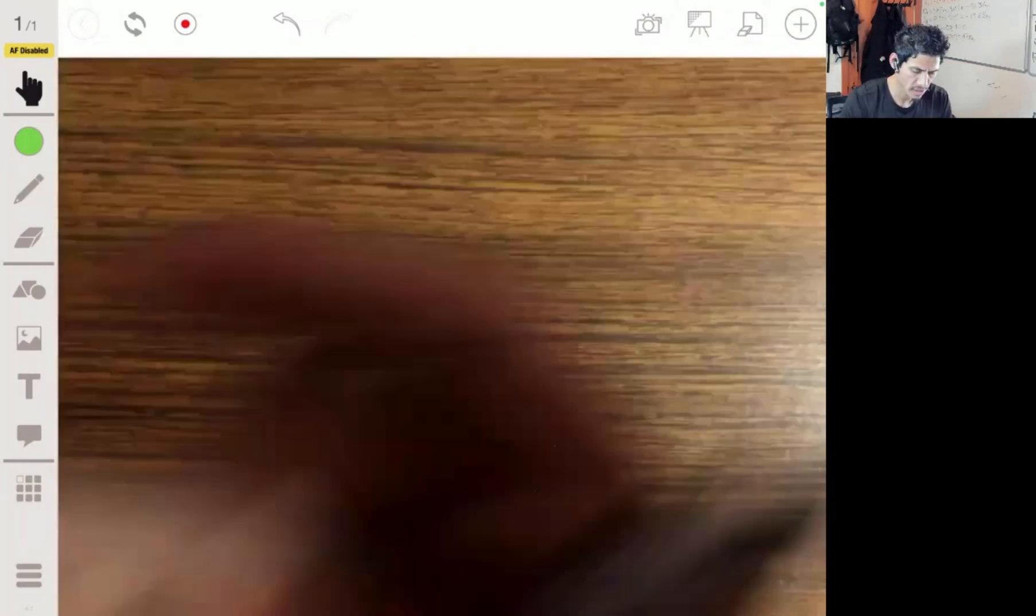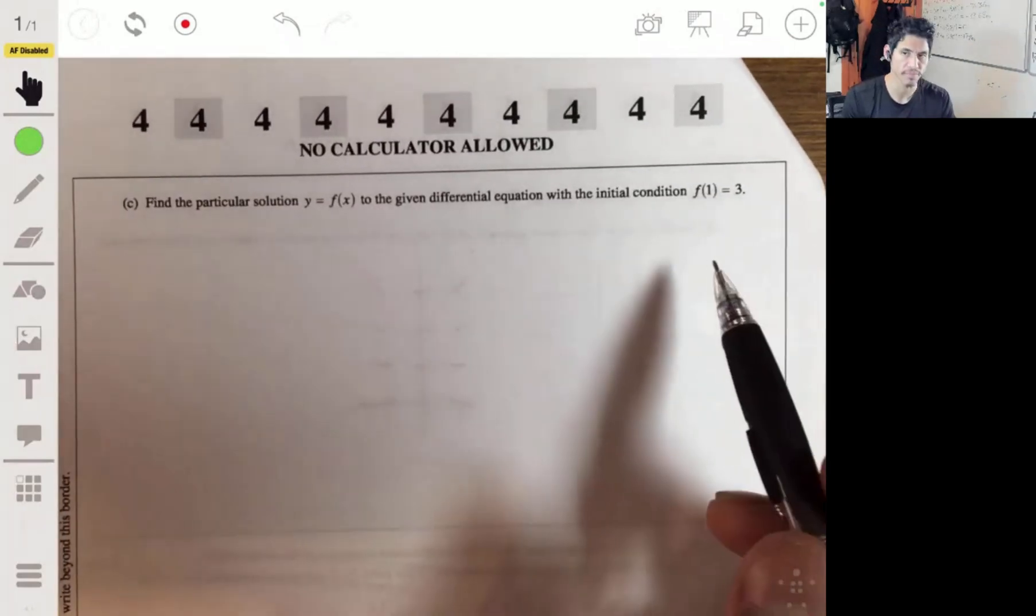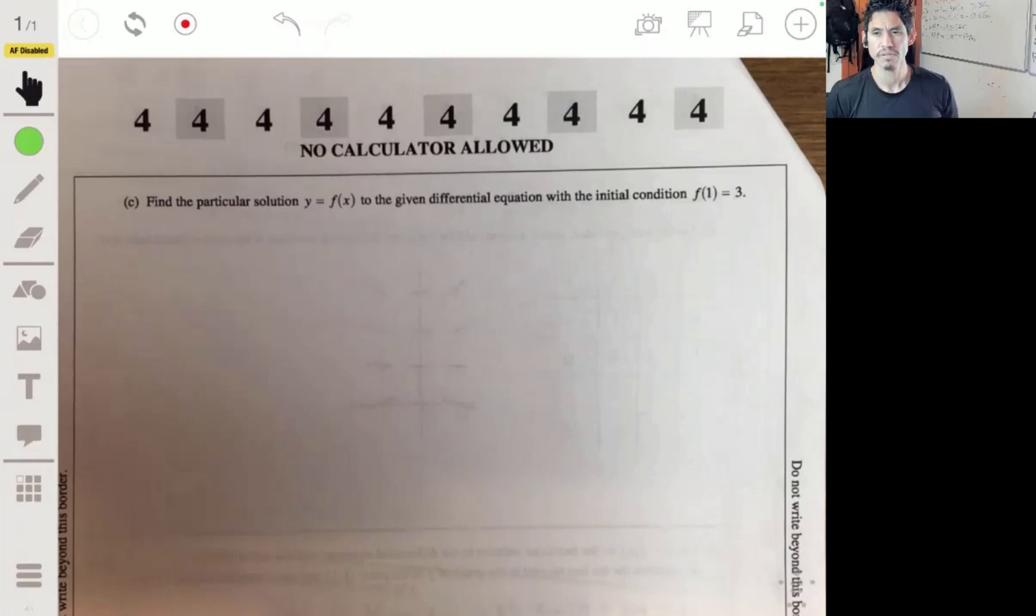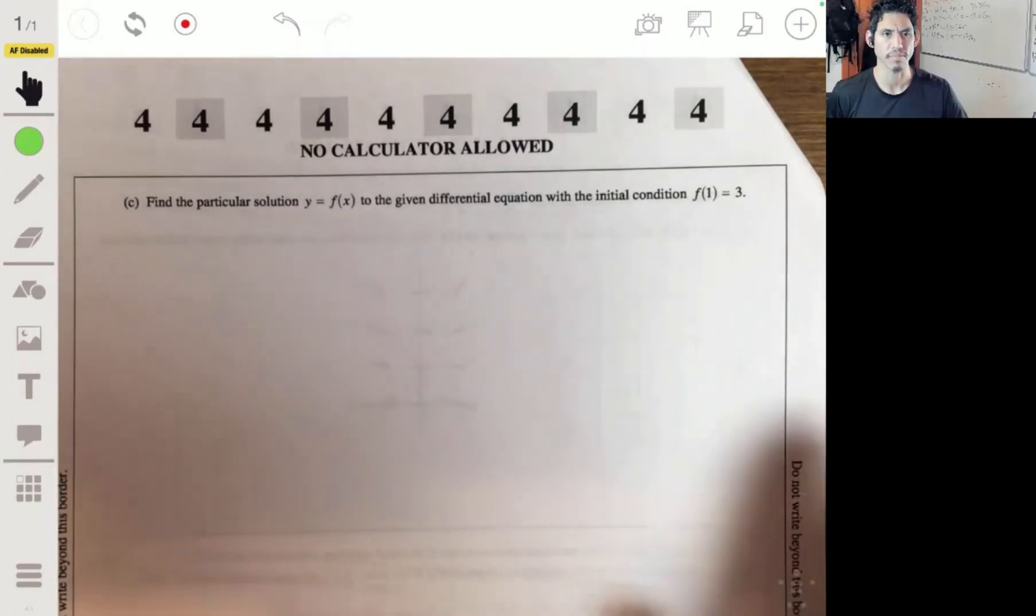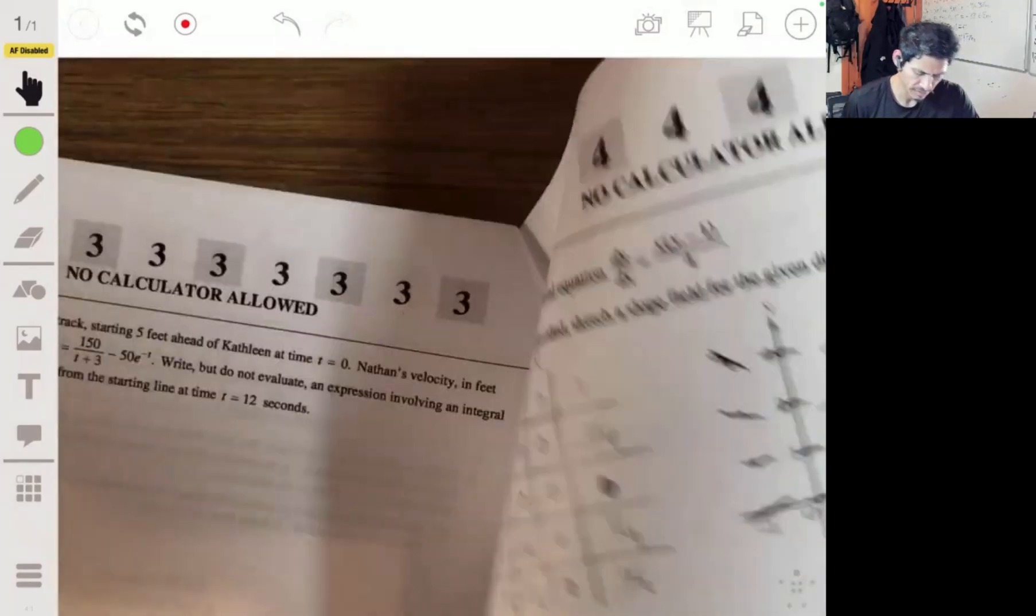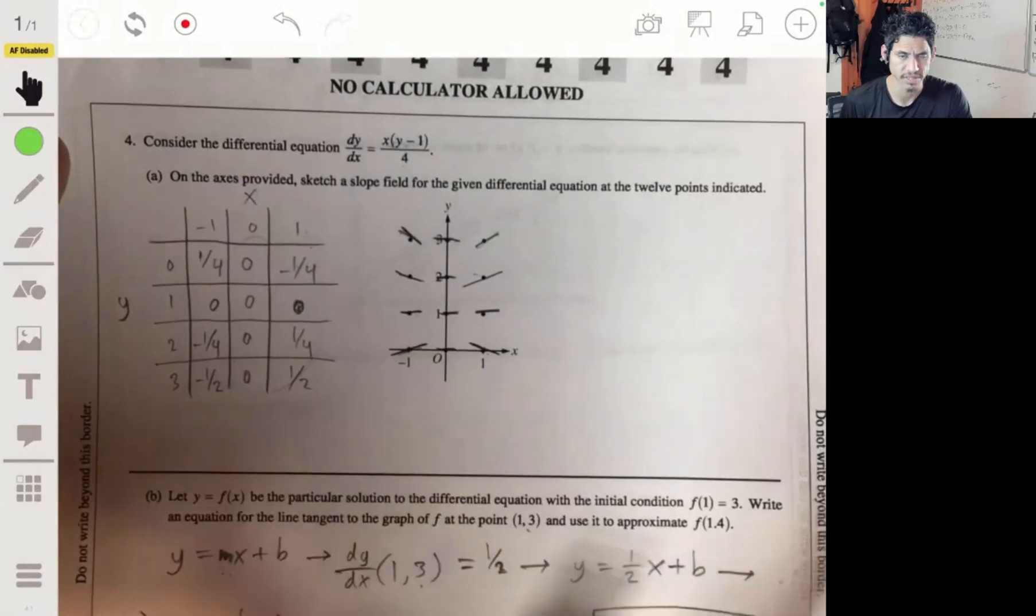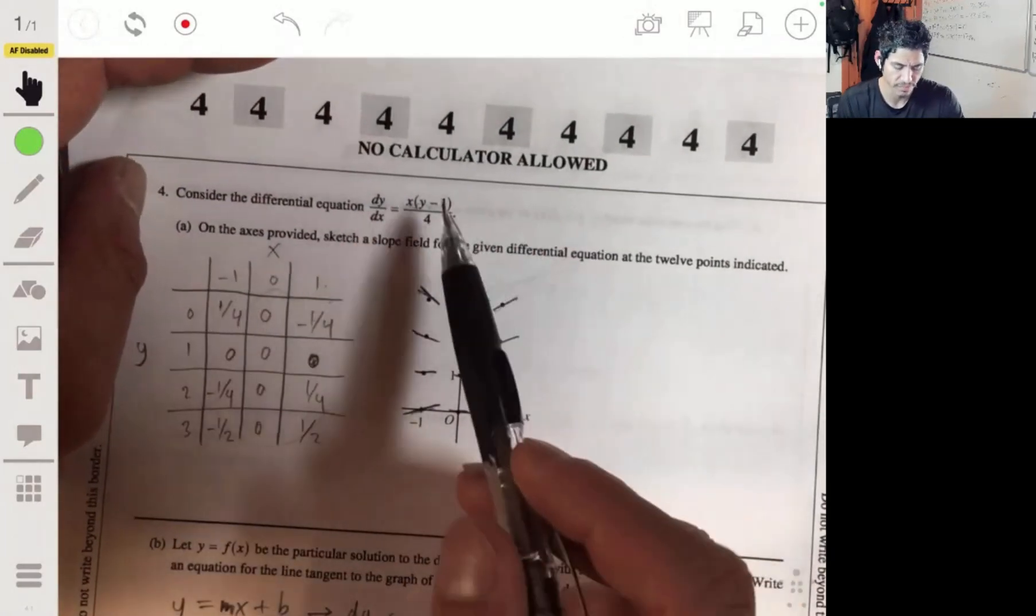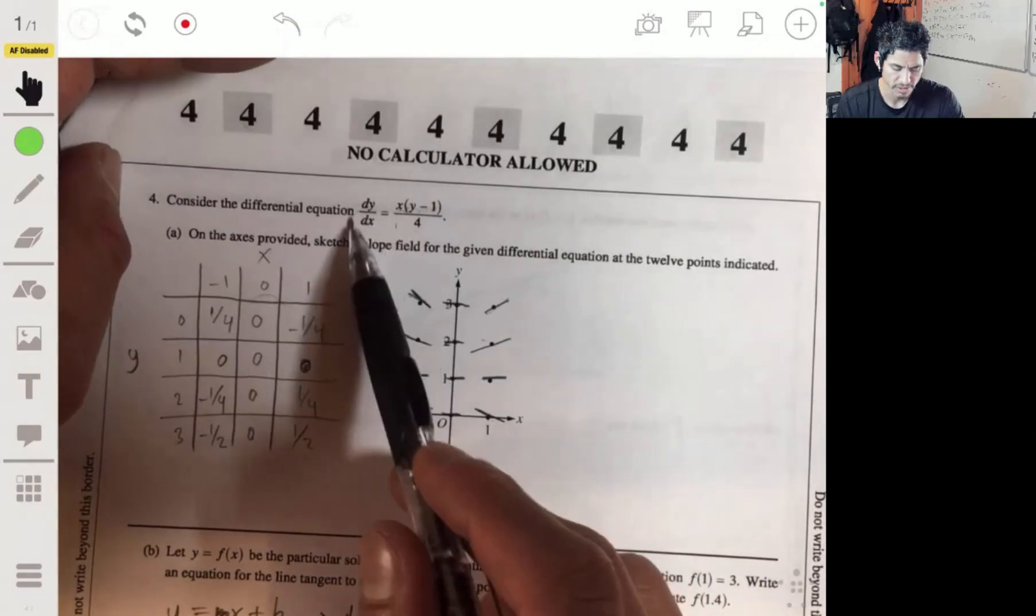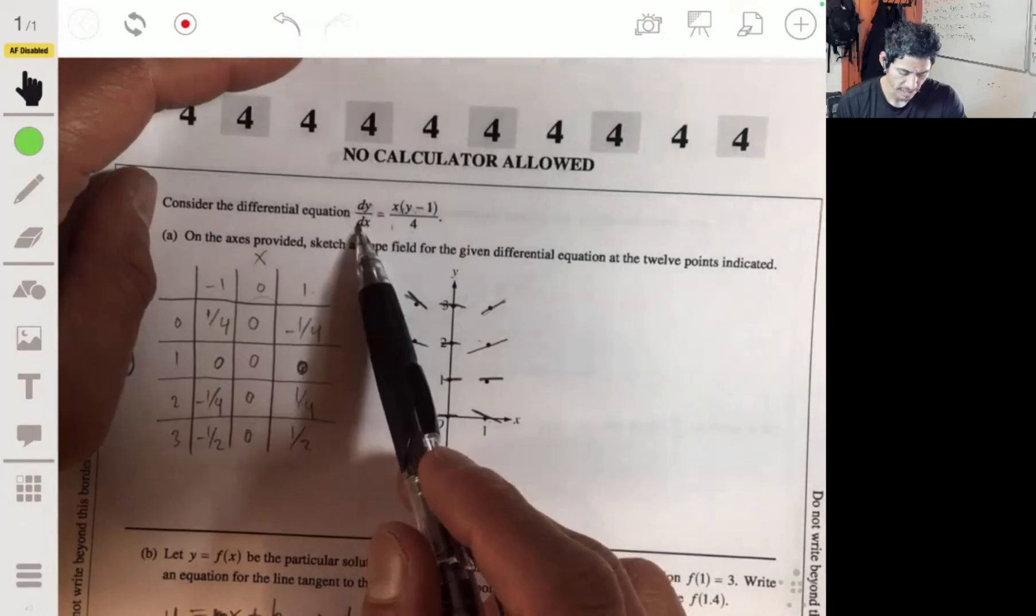In part c, find a particular solution for the differential equation with the initial condition f(1) is 3. I really like these ones. My students tend to struggle regularly on these. Maybe I'm just teaching it wrong, I don't know. But I'm going to go through it really, really detailed step by step. So we solved this, or we basically are going to integrate this. Separate the dy's on the left and dx's on the right.